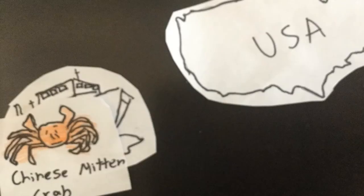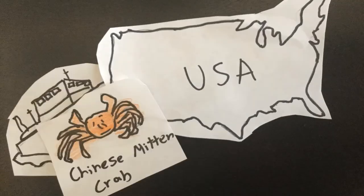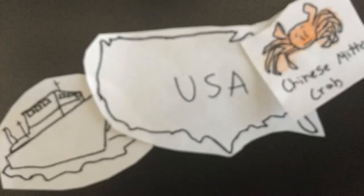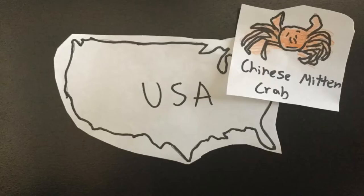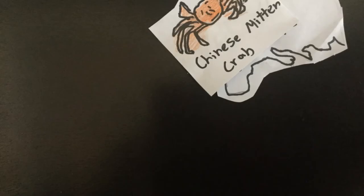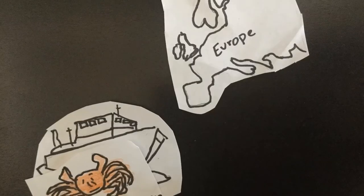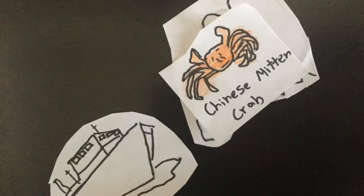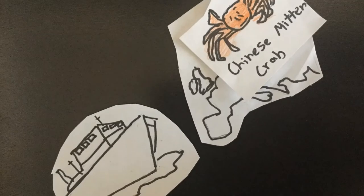Once introduced to California and many nations in Europe, the mitten crabs began to travel through the waterways all across the US and Europe. By 2007, mitten crabs were found in almost every American water source and were thriving. Chinese mitten crabs prefer a warm climate and are found in both salt and fresh water, which are aspects of American and European habitats, and therefore they thrived when introduced.